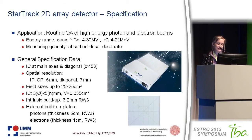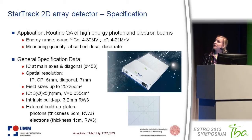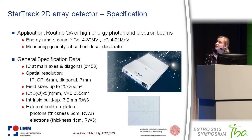The Star-Track 2D array detector is used for routine QA for high energy photon and electron beams. The measuring quantity is absolute absorbed dose. It has roughly 450 ionization chambers located on the in-plane, cross-plane, and diagonal directions. The resolution is five millimeters for in-plane and cross-plane and seven millimeters for the diagonal.